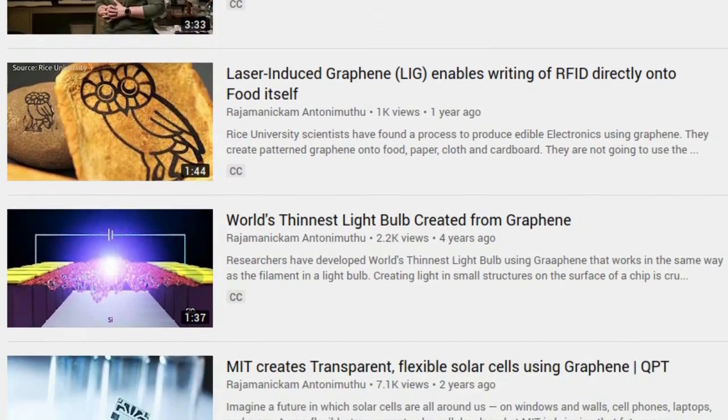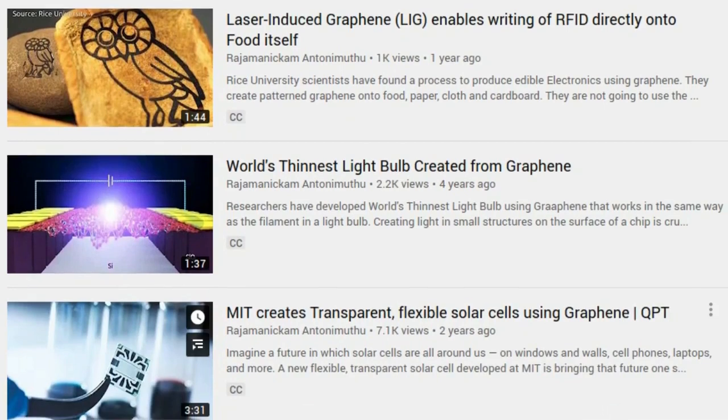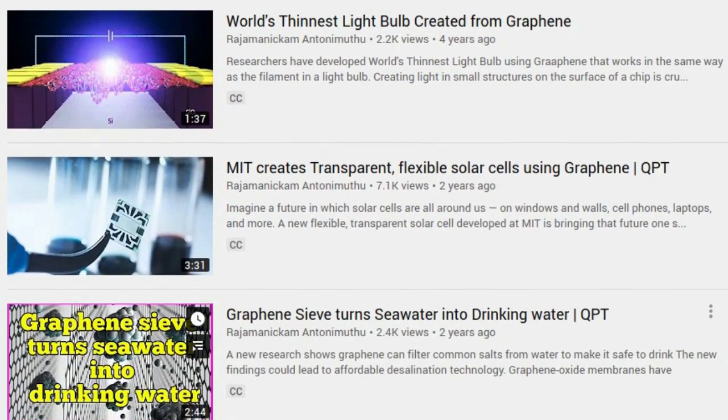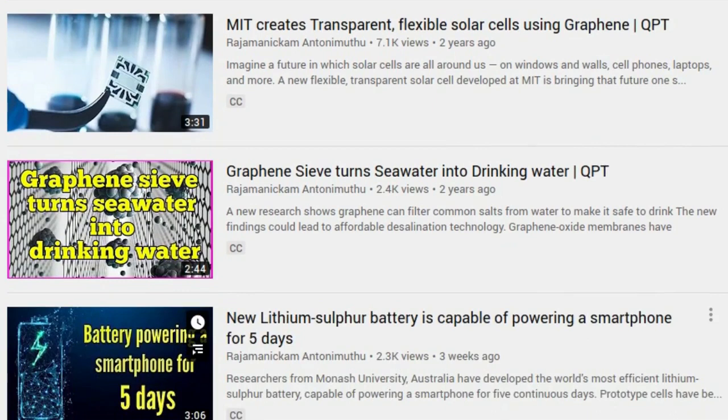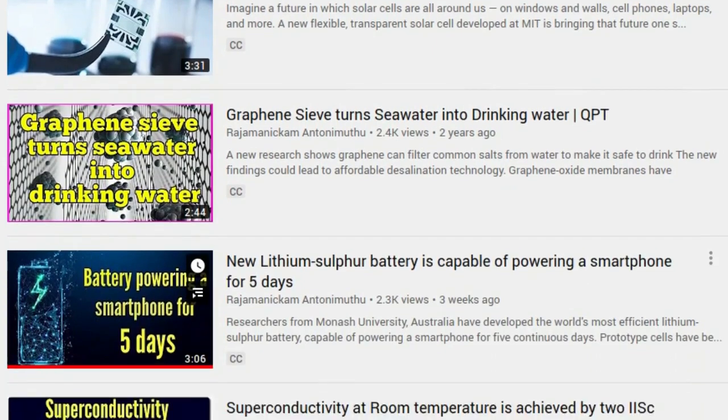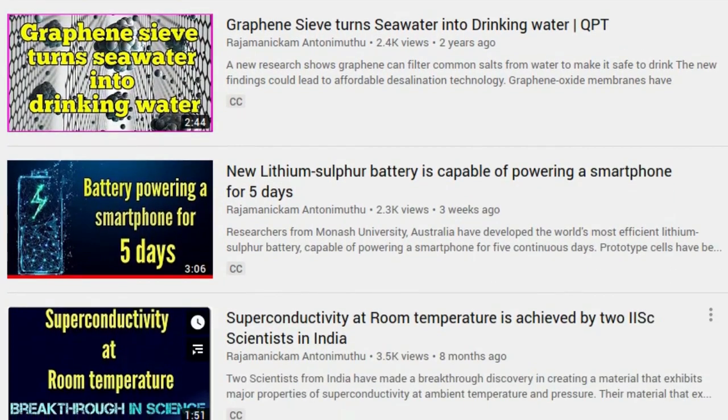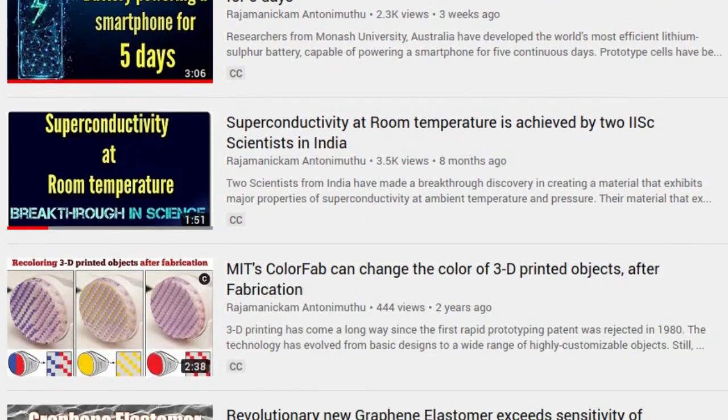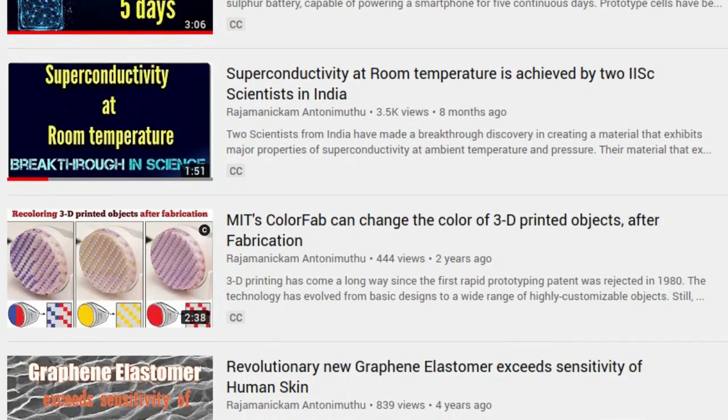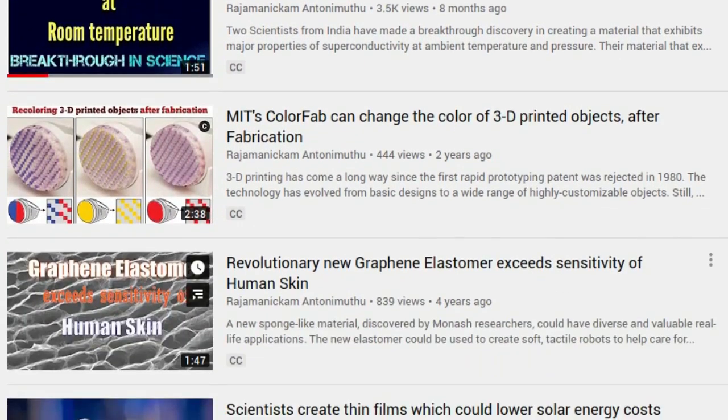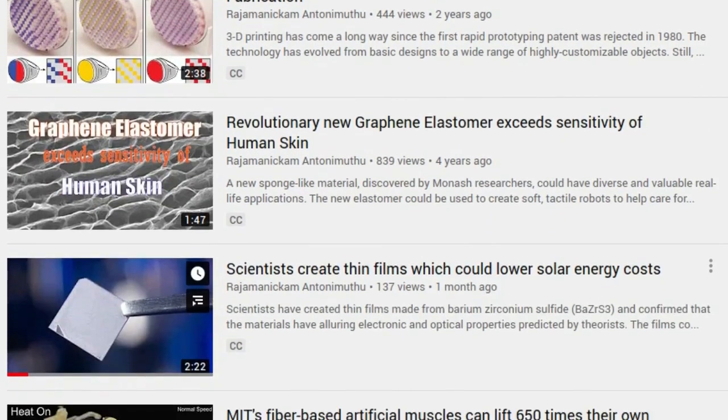Most bulk-scale graphene is produced by a top-down approach, exfoliating graphite found in pencil. But this process often requires large amounts of solvent with high-energy mixing, shearing, sonication, or electrochemical treatment.